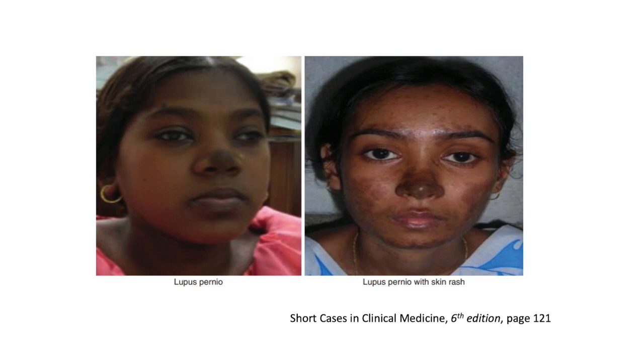Lupus pernio — it's a violaceous lesion, a patch that we can see on the nose, and here as well with some hyperpigmentation of the cheeks.